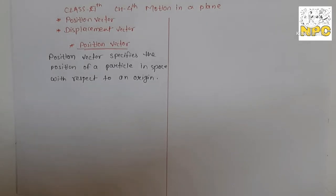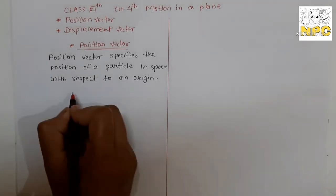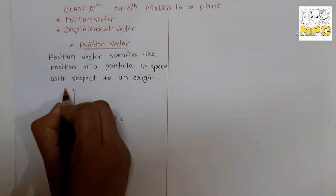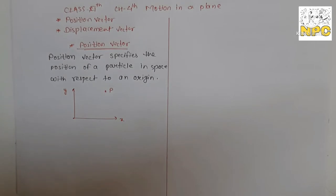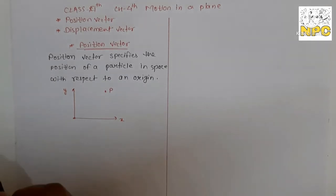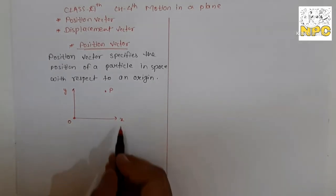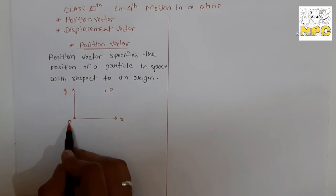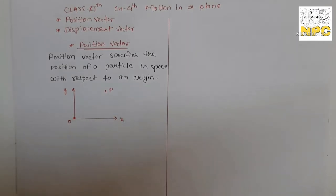If you want a simple feeling about position vector, think that you are in a plane — two dimensions, x and y. This becomes the x-axis and y-axis, and you can see this particle, or think of yourself as standing at a point. In x and y, how much will your position be? Which reference point can you use to measure? Yes — the origin. This is the point where x and y intersect. From the origin, we can tell the position of point P.